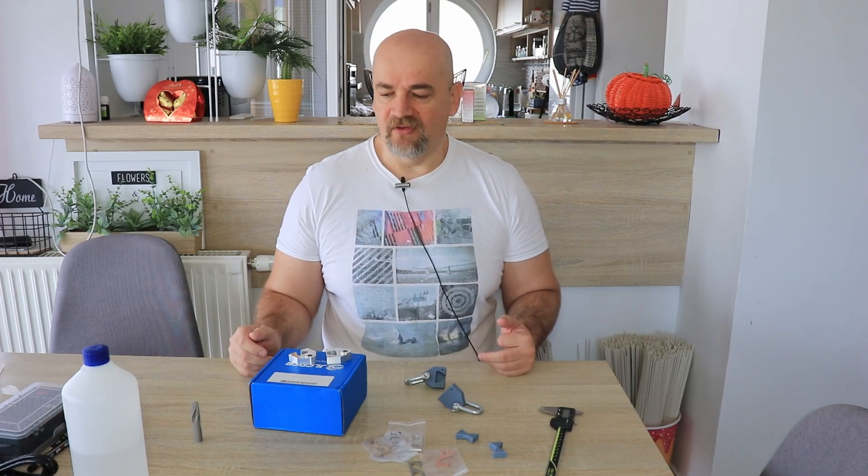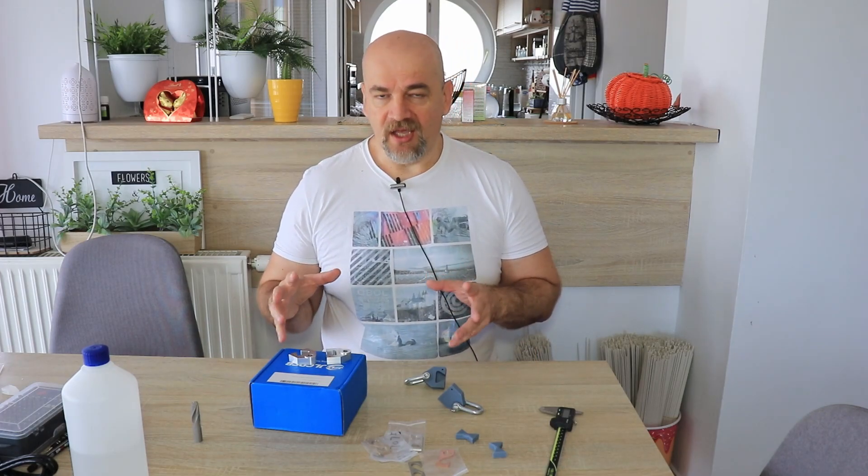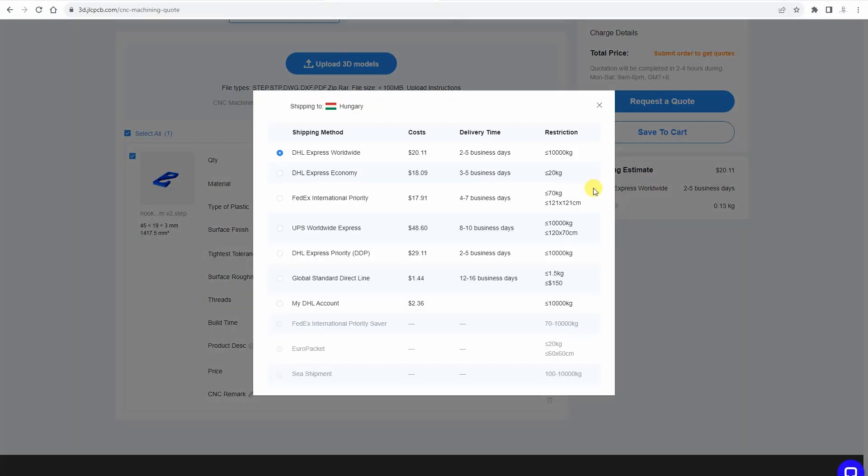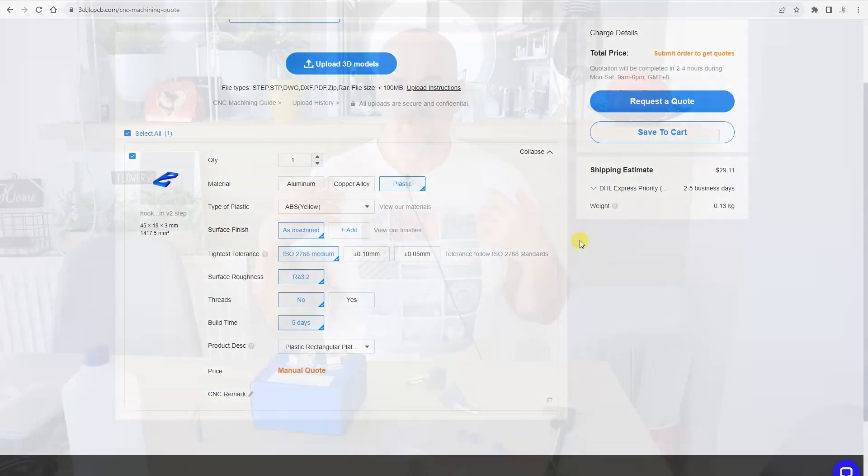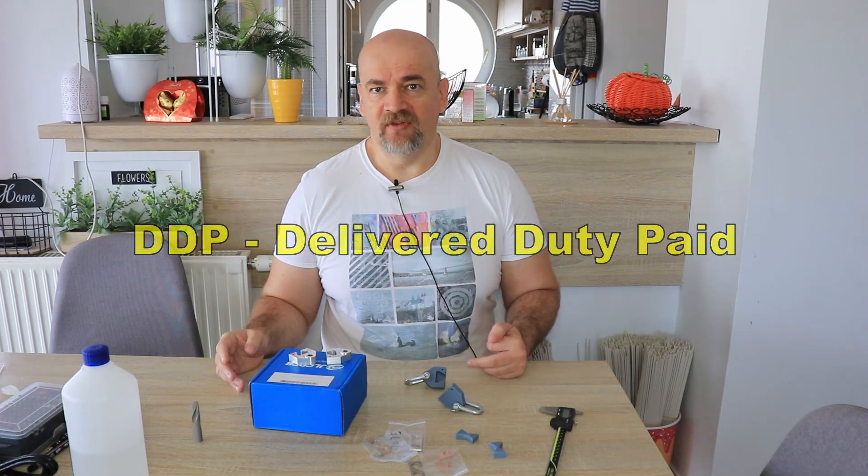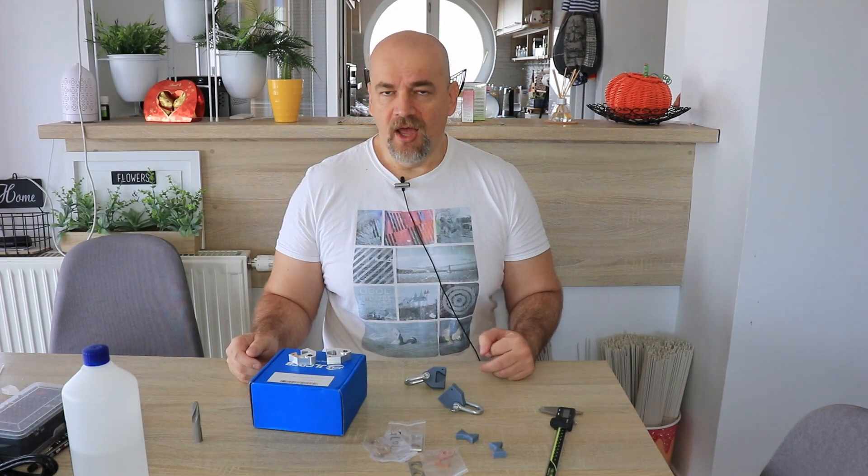Actually they have very good prices for 3D printing, I already experienced that, and it looks like they have good prices here for CNC machining too. About the shipping, they have different options and I chose the DHL Express with the DDP parity. I am in Europe and with the DDP parity all duty taxes are handled by JLCPCB. Of course it is a little bit expensive but we don't have to deal with the customs.